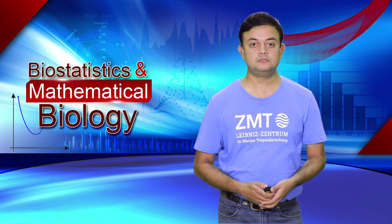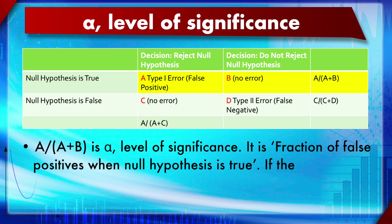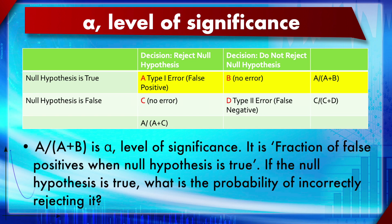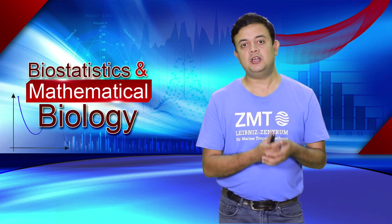Alpha, the level of significance, is the fraction of false positives when the null hypothesis is true — specifically, it is a/(a+b) in a two-way contingency table. When the null hypothesis is true, alpha represents the probability of incorrectly rejecting it. The p-value answers: if the null hypothesis is true, what is the probability of getting a difference as large as or larger than the one observed?